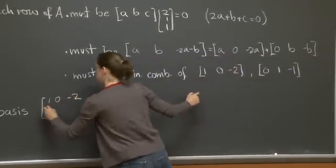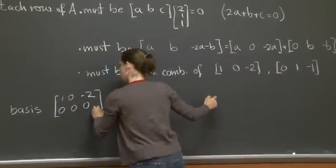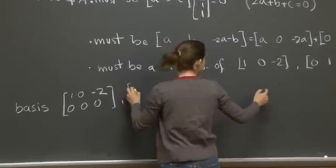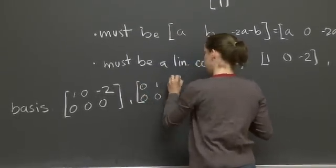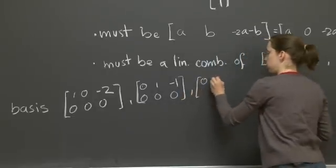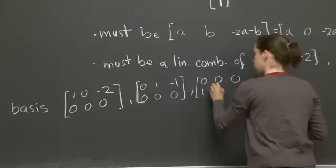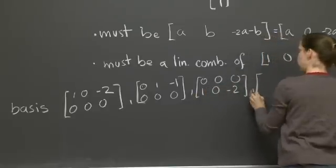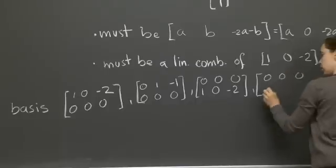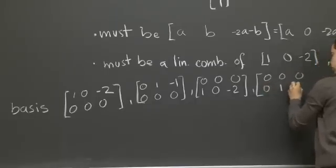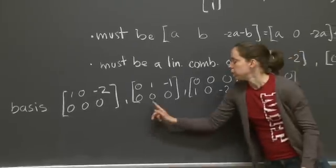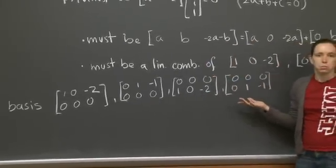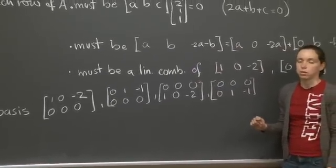1, 0, minus 2, and I'll keep the second row with 0's. 0, 1, minus 1, and I'll keep the second row of 0's. And now the same, but keeping the first row with 0's, and taking these vectors on the second row. So this is a basis for my vector space, 1, 2, 3, 4. That also means that the dimension of this subspace is 4.